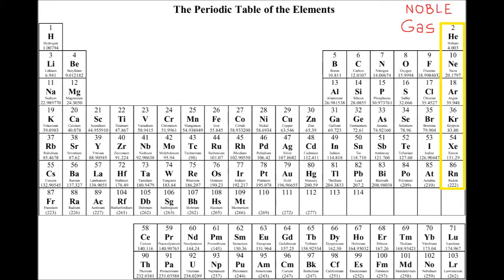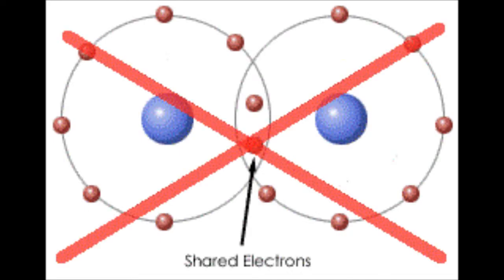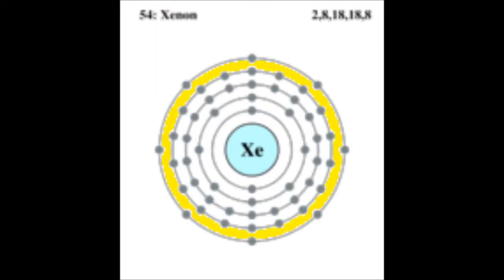Being a noble gas on the periodic table, xenon was originally assumed to be inert and unable to chemically bond with other elements because it is stable on its own, containing a full octet of electrons in its valence shell.